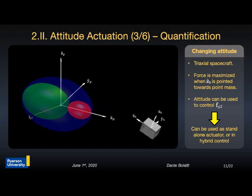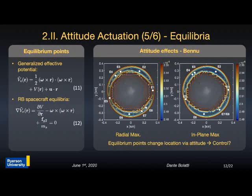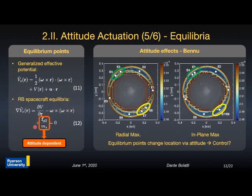These results indicate the possibility of using attitude as an actuator by changing the magnitude and orientation of the second-order coupled force. Based on these results, the coupling effects on equilibrium points near asteroids are studied. In a rotating frame corresponding to the asteroid body-fixed frame, a generalized effective potential including both gravitational potential and centrifugal force effects is defined. In equation 11, the coupling effects are introduced on term U, and by computing the gradient and setting it to zero, the equilibrium point positions are obtained in equation 12, where the attitude-dependent force is made explicit. Considering a large spacecraft above asteroid Bennu, the equilibrium point positions are affected by the spacecraft orientation, as visible in the positions of points E3, E4, E7, and E8.